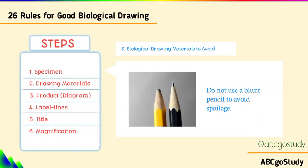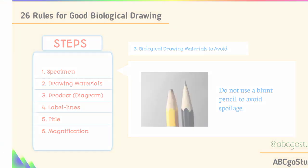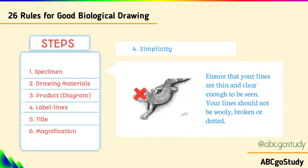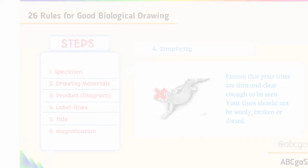Number three, drawing material to avoid: do not use a blunt pencil, for it will spoil your diagram. Number four, simplicity — ensure that your lines are thin and clear enough to be seen. Lines should not be woolly and should not be broken or adjusted.